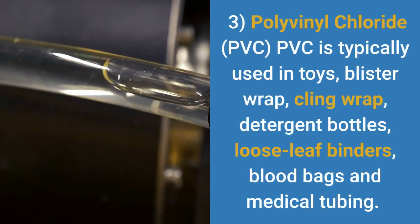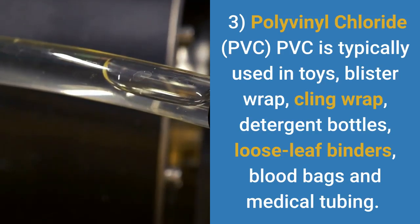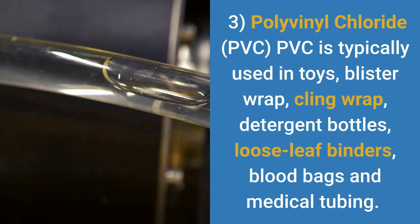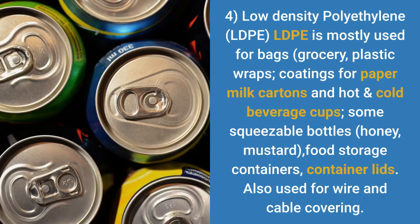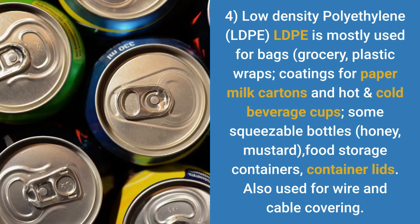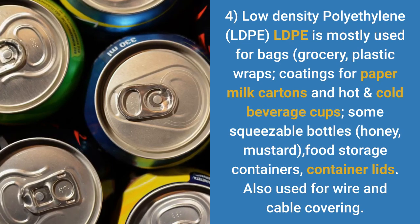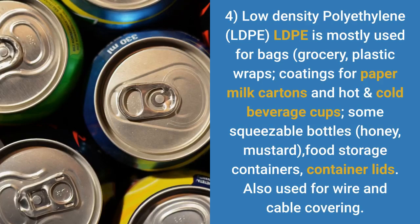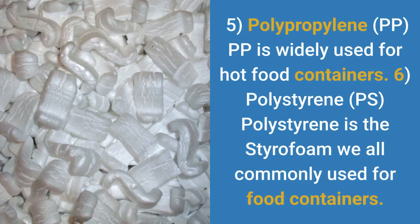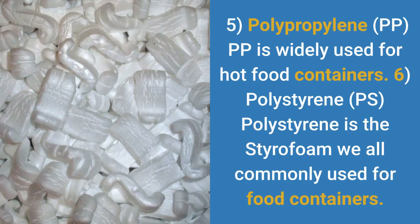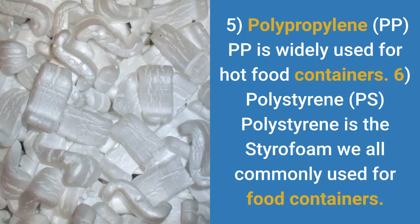3. Polyvinyl chloride (PVC) — typically used in toys, blister wrap, cling wrap, detergent bottles, loose-leaf binders, blood bags, and medical tubing. 4. Low density polyethylene (LDPE) — mostly used for bags, grocery bags, plastic wraps, coatings for paper milk cartons and hot and cold beverage cups, some squeezable bottles, honey, mustard, food storage containers, container lids, and also used for wire and cable covering. 5. Polypropylene — widely used for hot food containers. 6. Polystyrene — the styrofoam we all commonly use for food containers.